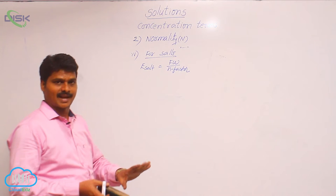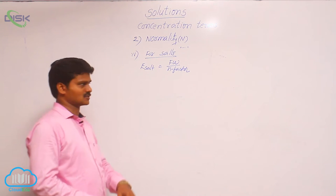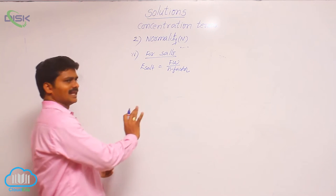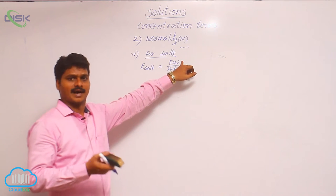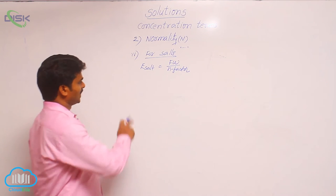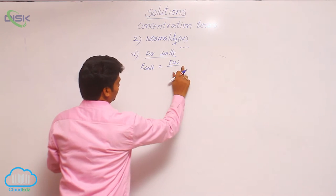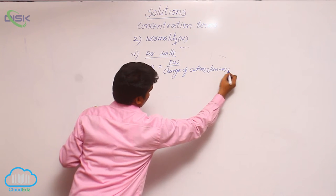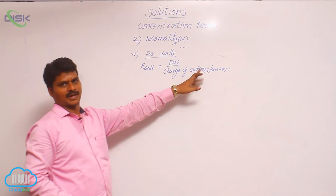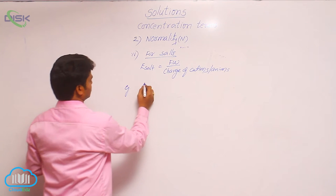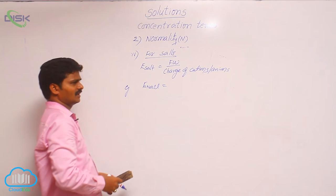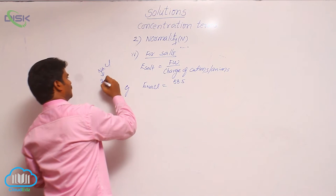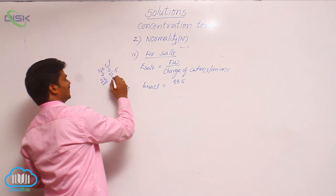For ionic compounds and ions, we use the word formula weight. Formula weight calculation is similar to molecular weight calculation. So for salts: formula weight divided by n-factor, where n-factor is the charge of all cations or all anions of the given salt. For NaCl: formula weight is 58.5 (sodium = 23, chlorine = 35.5). Do not use the word molecular weight for NaCl since it is an ionic compound.